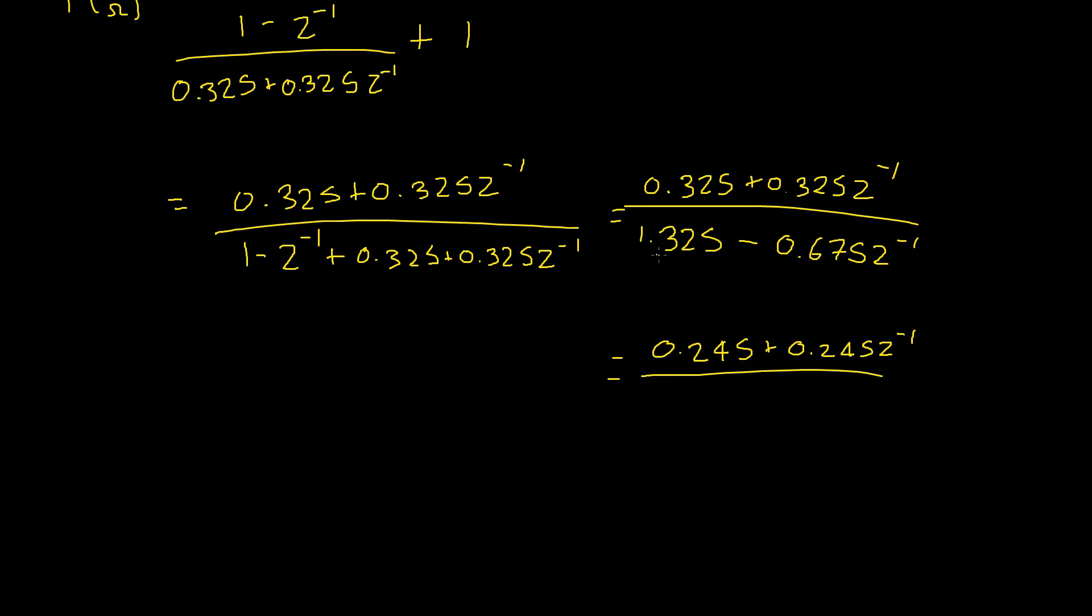And then, in our denominator, our 1.325 divided by 1.325 becomes 1, just as expected, minus 0.675 divided by 1.325 will give us 0.509 z to the power of negative 1. Okay, so we have our final digital filter.